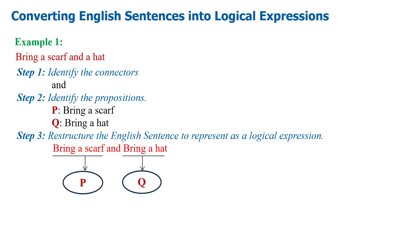These two propositional variables can be combined by using the logical operator conjunction, because conjunction represents the connector AND. So P conjunction Q is the logical expression representing the English sentence 'bring a scarf and a hat'.